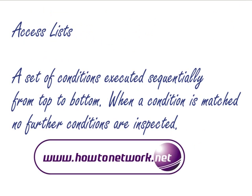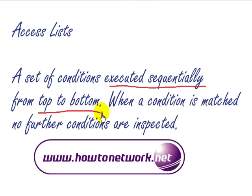So basically this is what I define as an access list: it's a set of conditions executed sequentially. It goes in a sequence from top to bottom - important to remember this and we'll cover this in more detail. When a condition is matched, no further conditions are inspected. So basically it's just a set of rules that give the router a yes or no answer, and you'll decide what conditions happen when we hit the yes or the no.